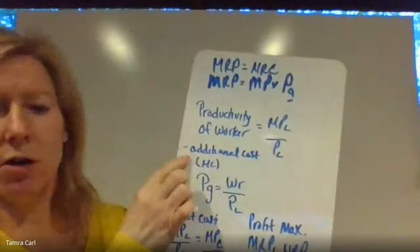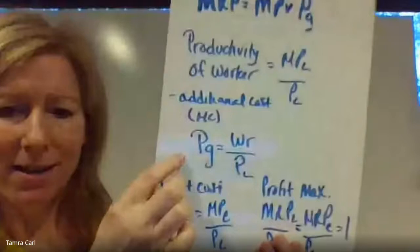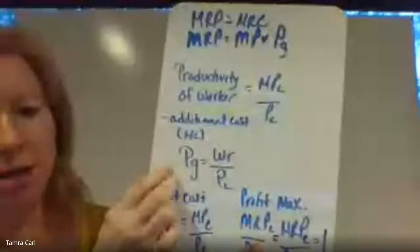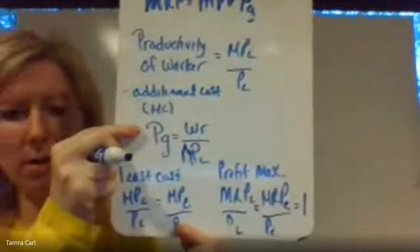They could also say the marginal cost, because that additional cost is how productive they are. This is a big one: PG equals the wage rate divided by the marginal product of labor. Think about this one when they ask you about different stuff. This has been the new thing that the College Board has asked the last couple of years — the wage rate divided by the marginal productivity of labor.